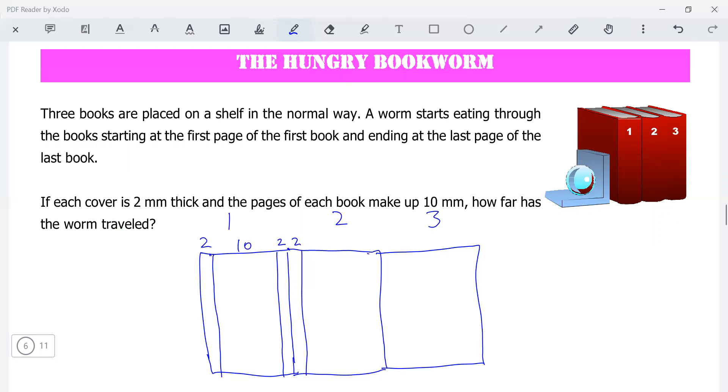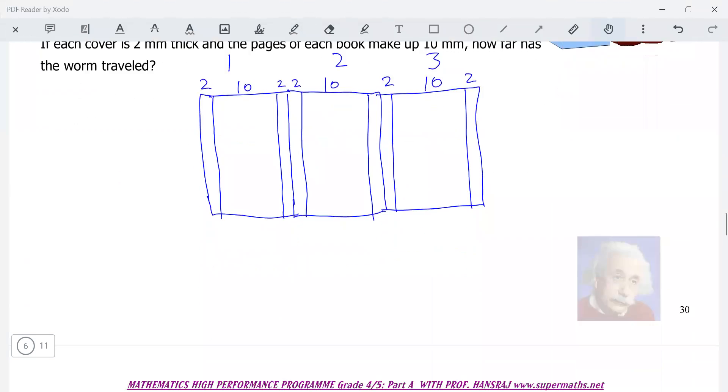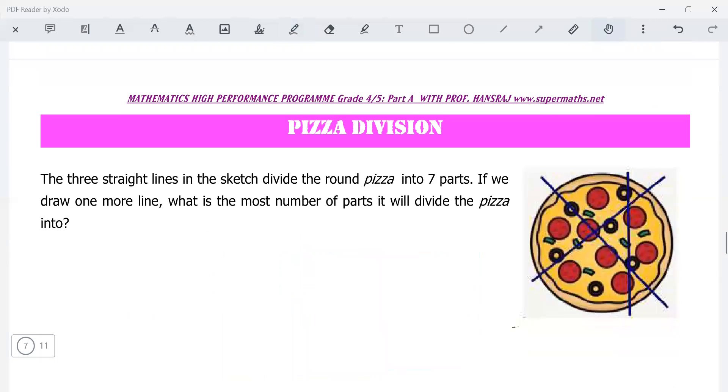That's two for the cover, ten for the book itself, and the last book: two for the cover, two for the cover there, and ten for the pages. It eats from the first page of the first book to the last page of the last book. How far has a worm traveled? Think it through.